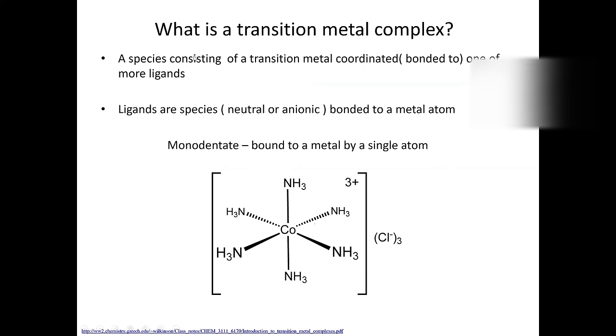First we're going to talk about the synthesis of transition metal complexes — a little background and how we're going to make a metal complex involving saccharinate and a transition metal. So what is a transition metal complex? A transition metal complex has a transition metal that is coordinated — not through a physical covalent bond, but an attraction — to one or more ligands.